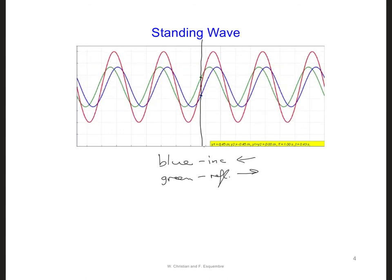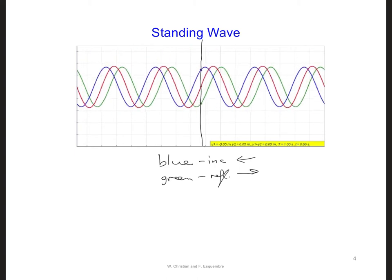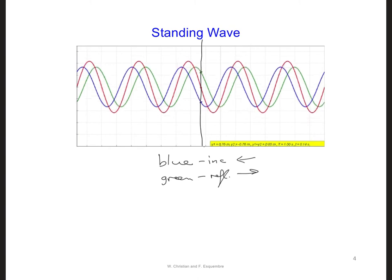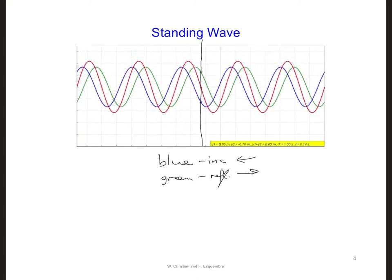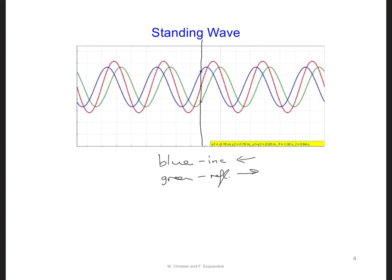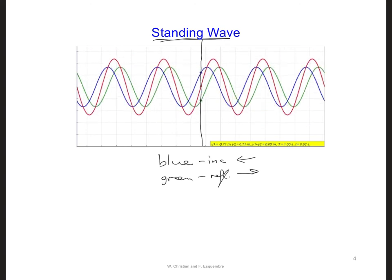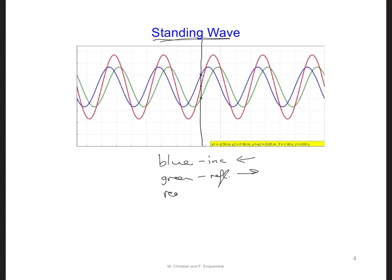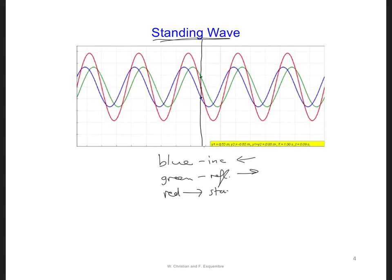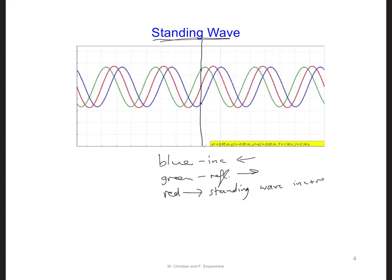The red curve is the summation of the blue and the green waves, and the red waveform oscillates up and down, but it looks stationary, meaning it doesn't look like it's moving to the left or to the right. This is where the word standing wave comes from. It looks like it's standing still, even though it's made up of two waves that are moving.